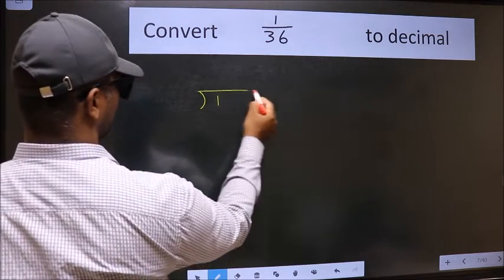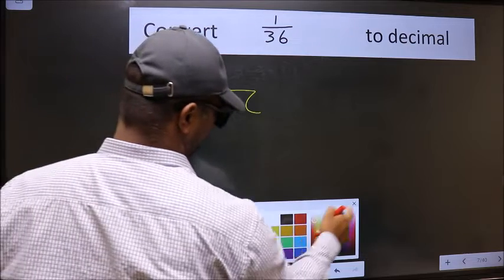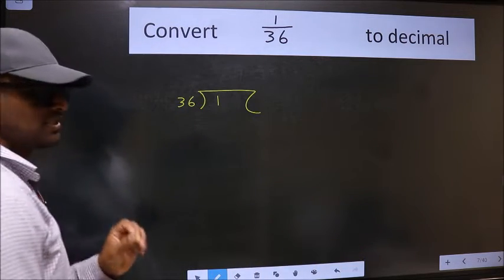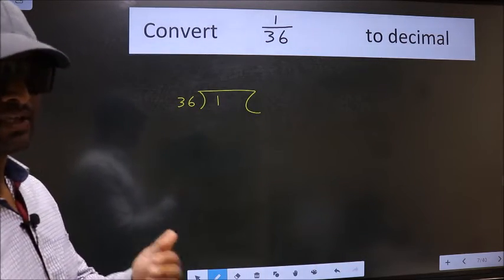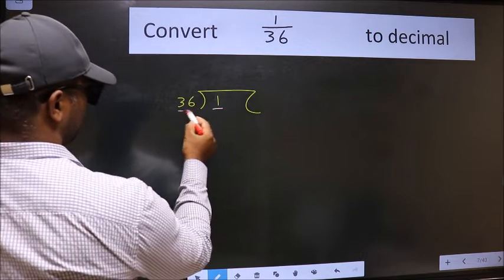1 here, 36 here. This is step 1. Next, here we have 1 and here 36.